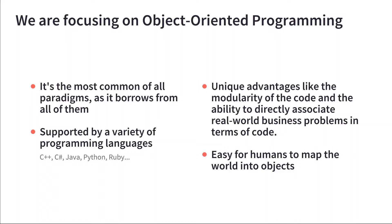Other typical languages supporting OOP include C++, C#, Java, Ruby, and also JavaScript — even though it's primarily a functional programming language. OOP has great unique advantages: it's a very modular language, so you can write objects or chunks of code that can be reused, and that can be mapped one-to-one to real-world business problems. Overall, it's just easy to use and gives you a good understanding of programming because it models itself on how the world works.